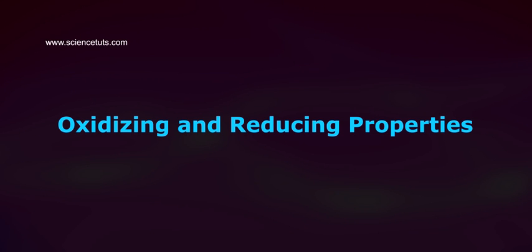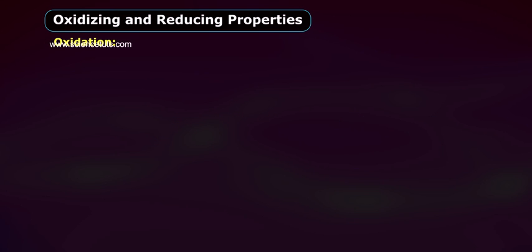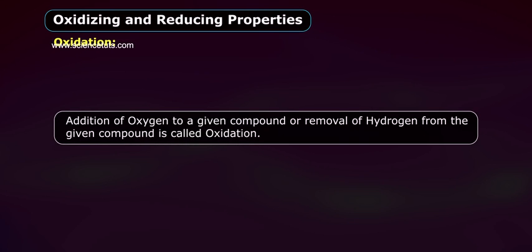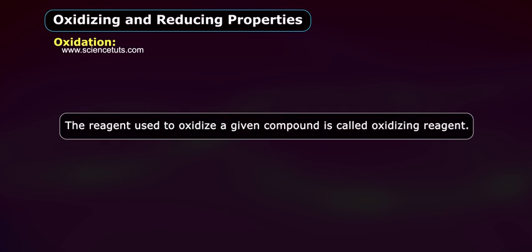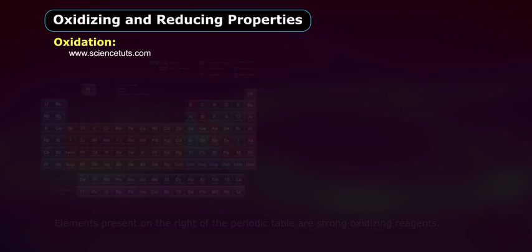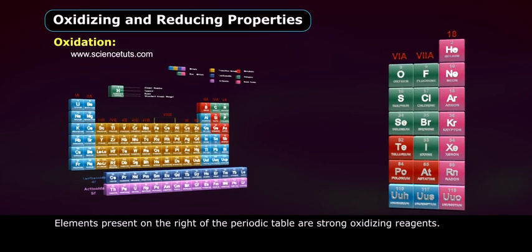Oxidizing and reducing properties. Definition: Oxidation is the addition of oxygen to a given compound, or the removal of hydrogen from a given compound. The reagent used to oxidize a given compound is called an oxidizing reagent. Elements present on the right of the periodic table are strong oxidizing reagents.